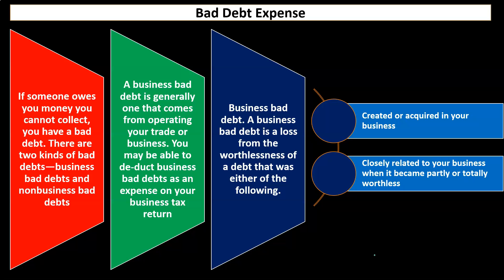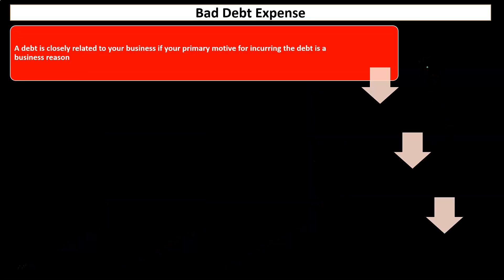The most common type of bad debt typically arises from your business operations — possibly doing work, services, or providing goods on account, meaning you didn't get money at that point in time but got a receivable that you then want to collect on, but have determined you never will be able to collect. So we're really looking at those business-type bad debts, which are much more likely to be deductible for the business. But again, it depends on certain factors with regards to our accounting methods.